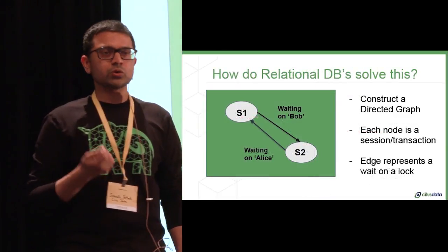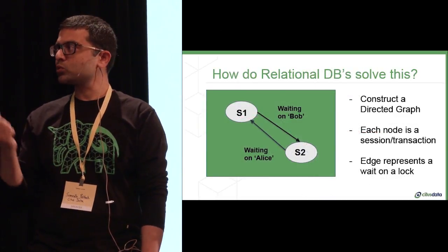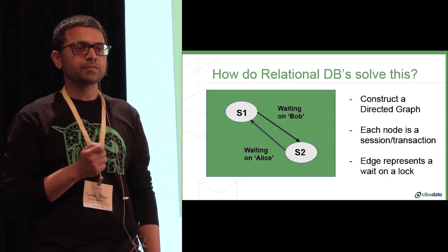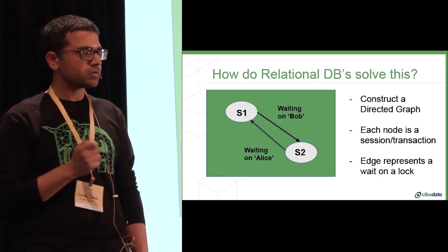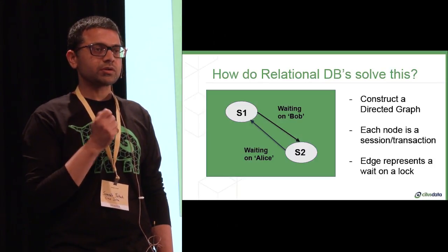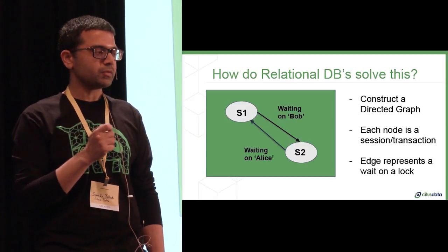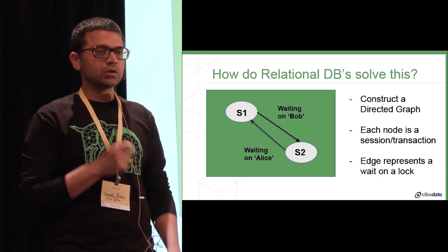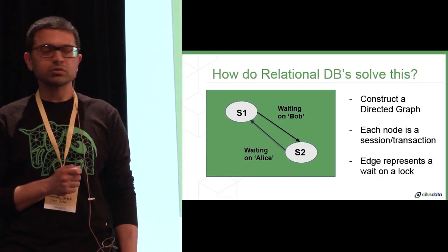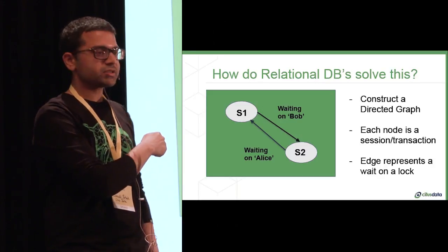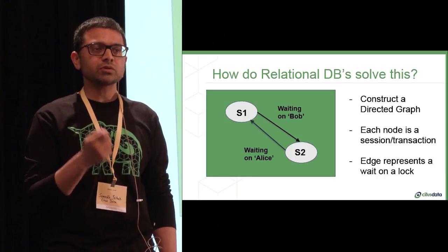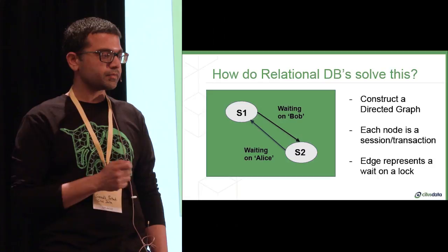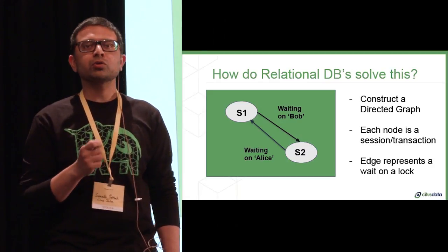So you would ask, don't relational databases already solve this? Well, they do. And the way they do that is actually construct a directed graph of the sessions or transactions. In this case, each node in this graph is a transaction, and each directed edge represents that transaction waiting on another one for a lock. Now you can run standard cycle detection algorithms in this graph. This is the simplest example, obviously, but you can imagine more complex scenarios with tens or hundreds of transactions. When a cycle is detected, you know there is a deadlock, and you can make the decision to kill one of these in order to make progress.